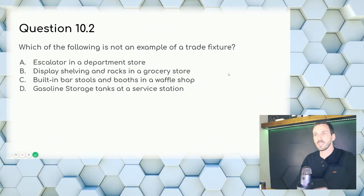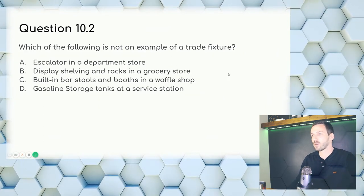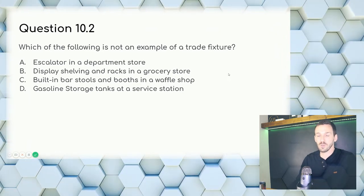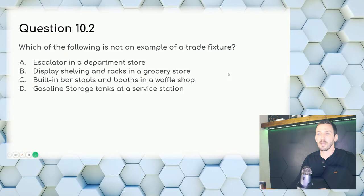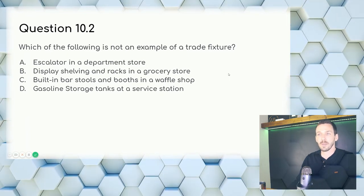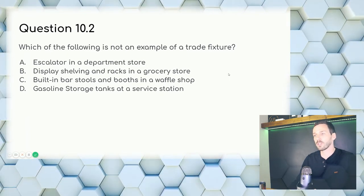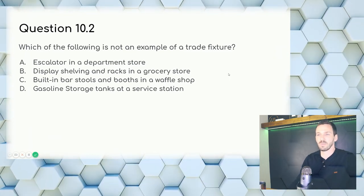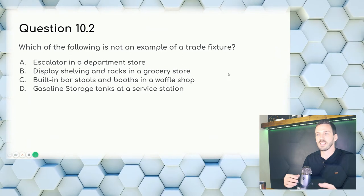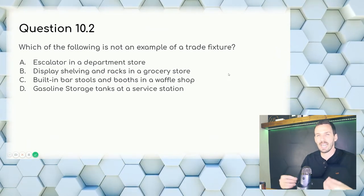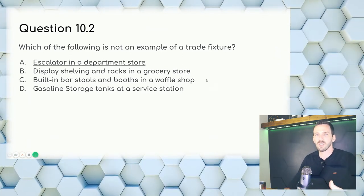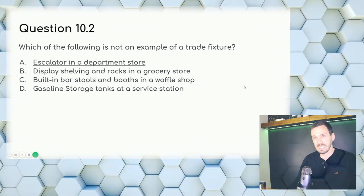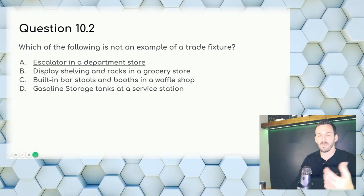Question 10.2: Which of the following is NOT an example of a trade fixture? Three of these items are specific to a business. Answer: A — an escalator in a department store, because JCPenney isn't going to take the escalator out of the mall. The escalator becomes part of the building, not a removable trade fixture.